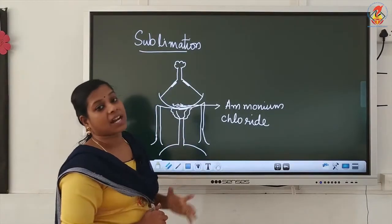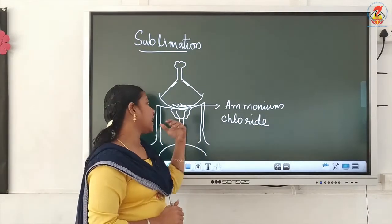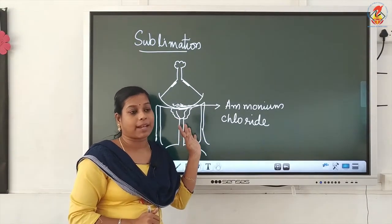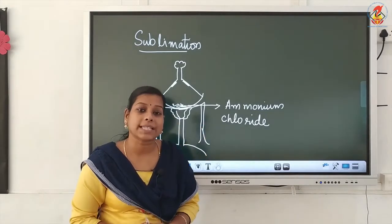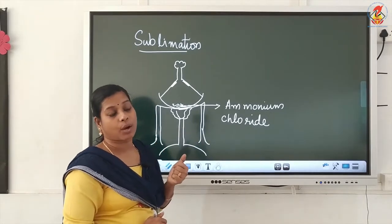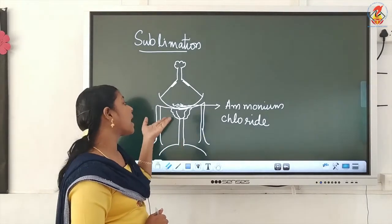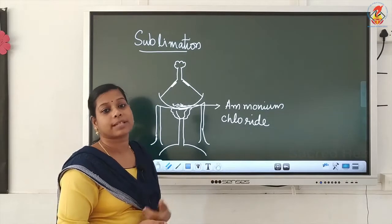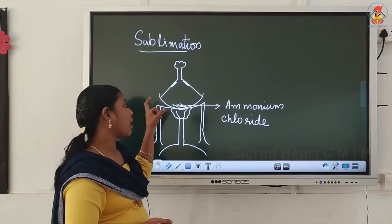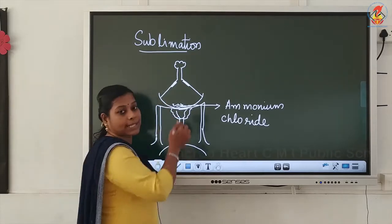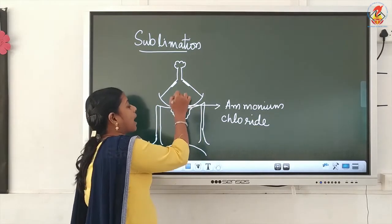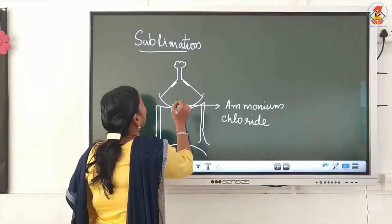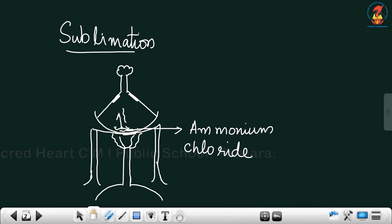Then we started heating this apparatus — the experimental setup. At that time, what is happening? We have taken the solid ammonium chloride or crushed camphor pieces and started heating that material. When we are heating, we can observe that without going into the liquid state, the solid ammonium chloride or camphor will directly go into the vapor phase.